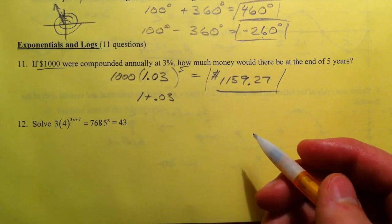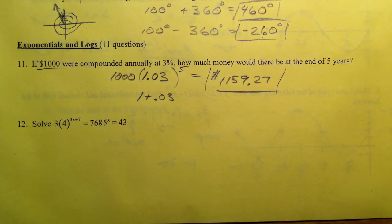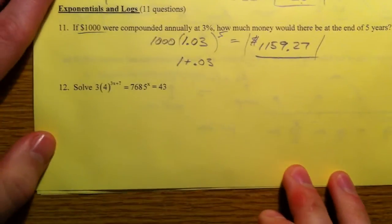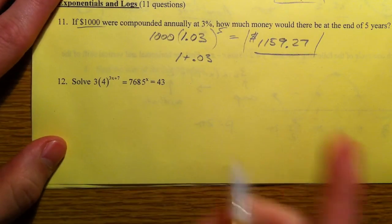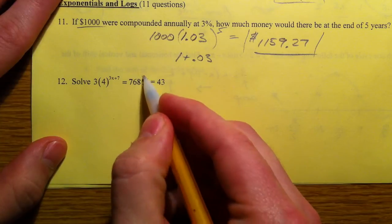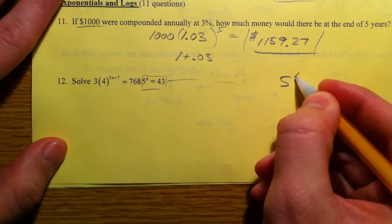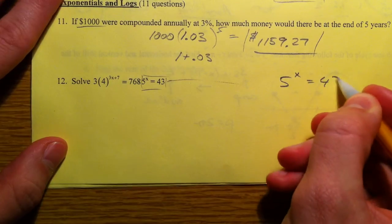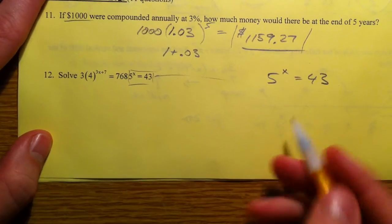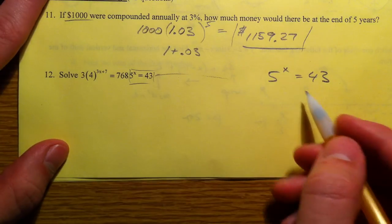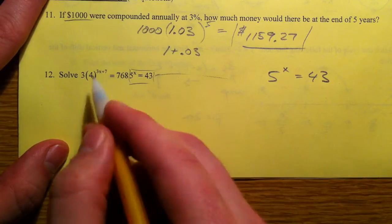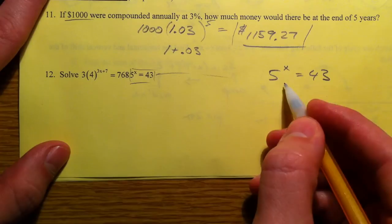Alright, solving this one. This formatted a little funny. Let's move this 5^x equals 43 over here, and I'm going to actually solve this one first because it's easier. There's less stuff going on.